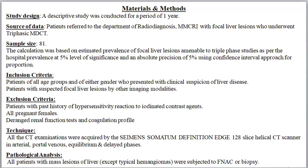Patients of all age groups and either gender with clinical suspicion of liver disease, or suspected focal liver lesions on other imaging modalities, were included. Patients with hypersensitivity to iodinated contrast agents, pregnant females, and those with deranged renal function tests and coagulation profiles were excluded. All CT examinations were acquired using a Siemens Somatom Definition AS 128-slice helical CT scanner in arterial, portal venous, and equilibrium and delayed phases. All patients with mass lesions, except typical hemangiomas, underwent FNAC or biopsy for pathological analysis.